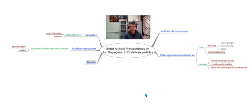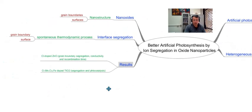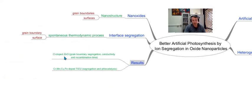Now I want to show some results from our work in photocatalysis and try to connect surface segregation with photosynthesis, and how this photosynthesis could be better with ion segregation. We have two works: one is the segregation of chlorines in zinc oxide grain boundaries, the change in conductivity, and the increase of recombination time and its consequences in photocatalysis; and the second group of results is transition metals doped titanium dioxide, and its segregation and photocatalysis.